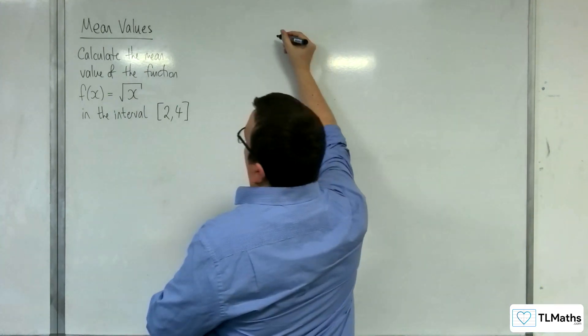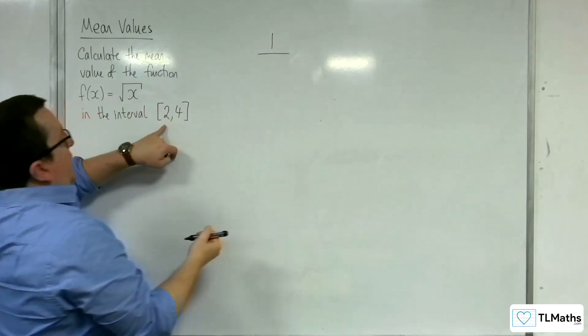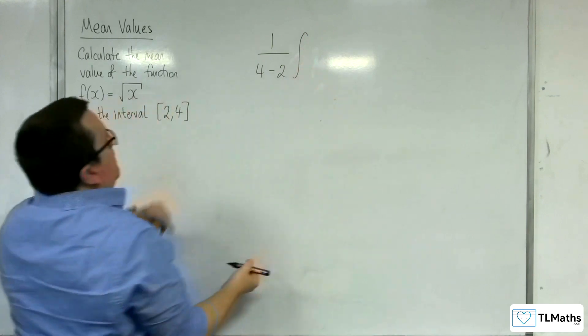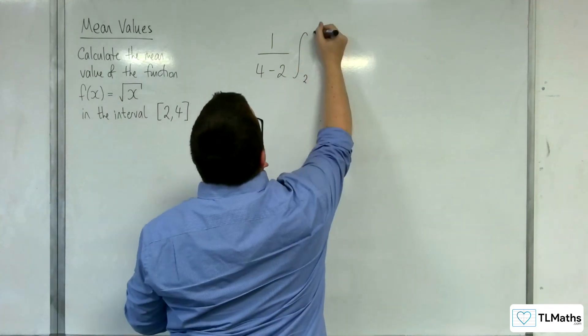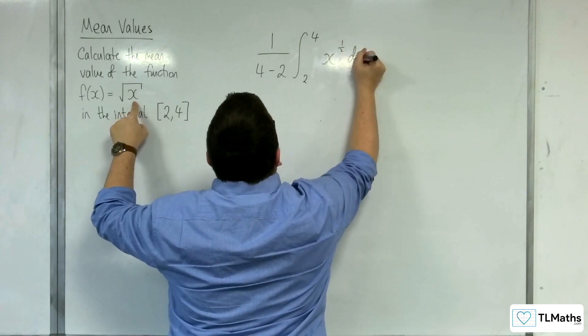So the mean value of the function will be 1 over 4 take away 2 times by the integral between 2 and 4 of the square root of x, which I'm going to write as x to the power of a half dx.